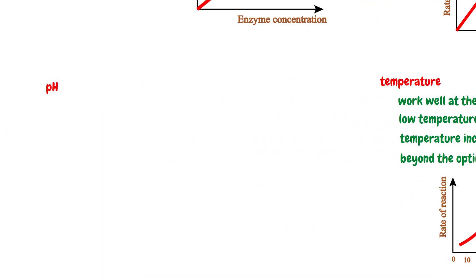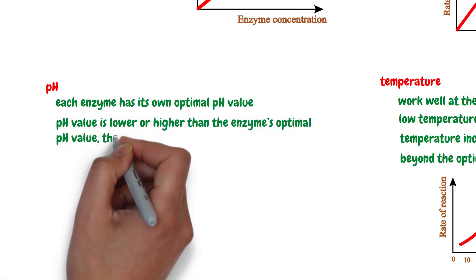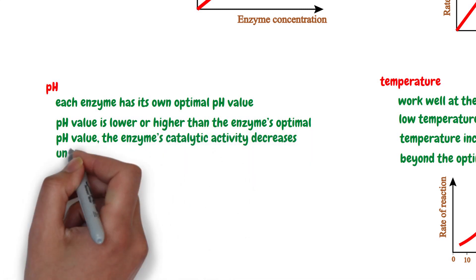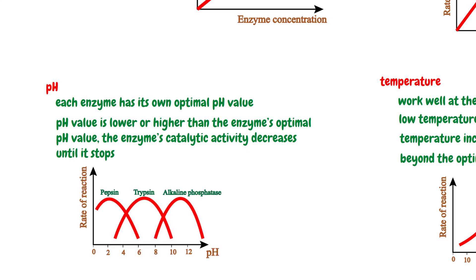The fourth factor is pH. Each enzyme has its own optimal pH value where it works well. Some enzymes work well in an acidic environment, some in a neutral environment, and some in a basic environment. When the pH value is lower or higher than the enzyme's optimal pH value, the enzyme's catalytic activity decreases until it stops. As seen in this graph, the rate of reaction is maximum for each enzyme at different pH values. For pepsin, enzyme activity is maximum at a pH of 2. Trypsin is maximum at 7, and alkaline phosphatase is maximum at 12.